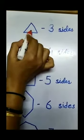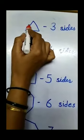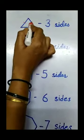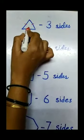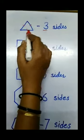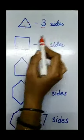A triangle. How many sides are there? 1, 2, 3. Three sides — it is called a triangle.